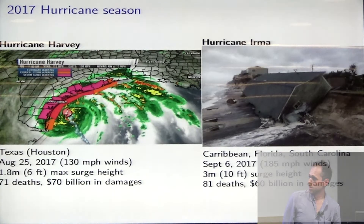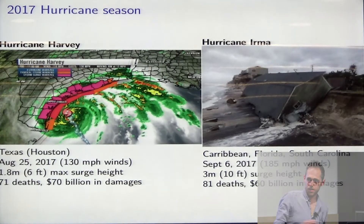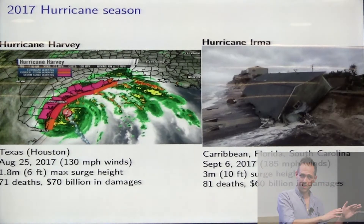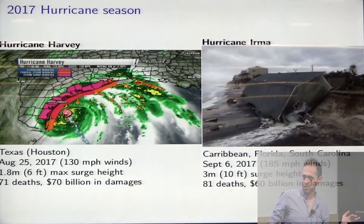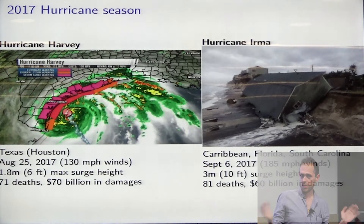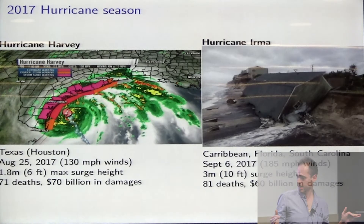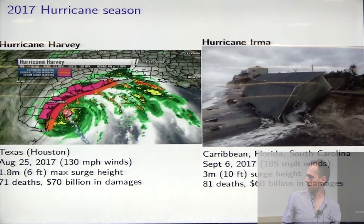For a hurricane or a typhoon, just to clarify: in the West Pacific they're called typhoons; in the West Atlantic and also the coast of Mexico, they're called hurricanes; if you're in the Indian Ocean, they're called cyclones. But they're all basically the same thing. Any of these things is called tropical cyclones.